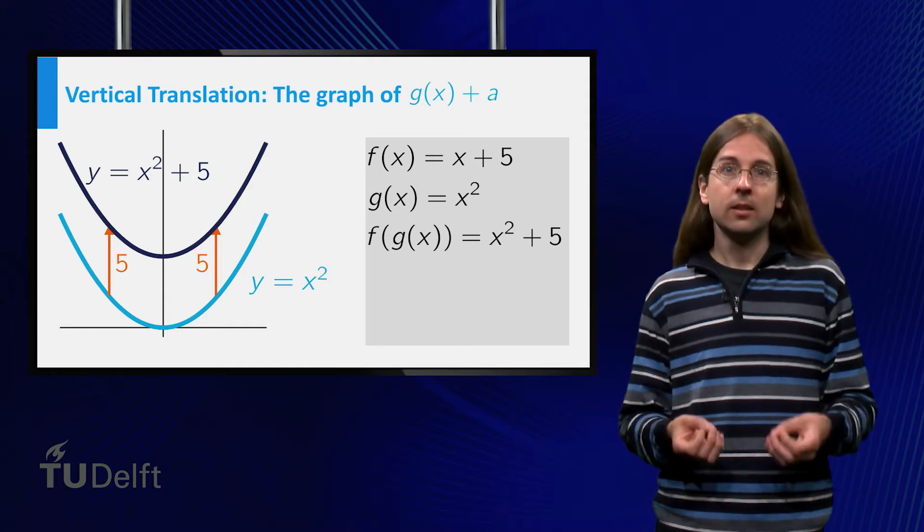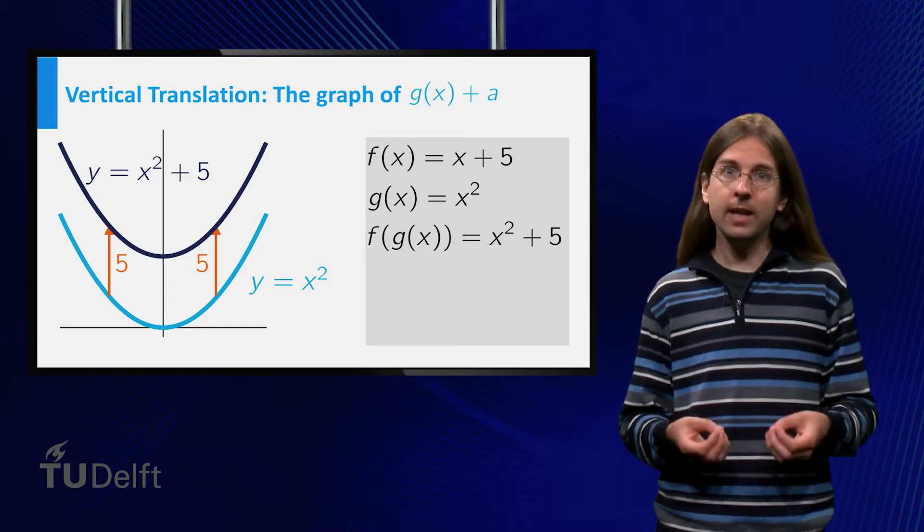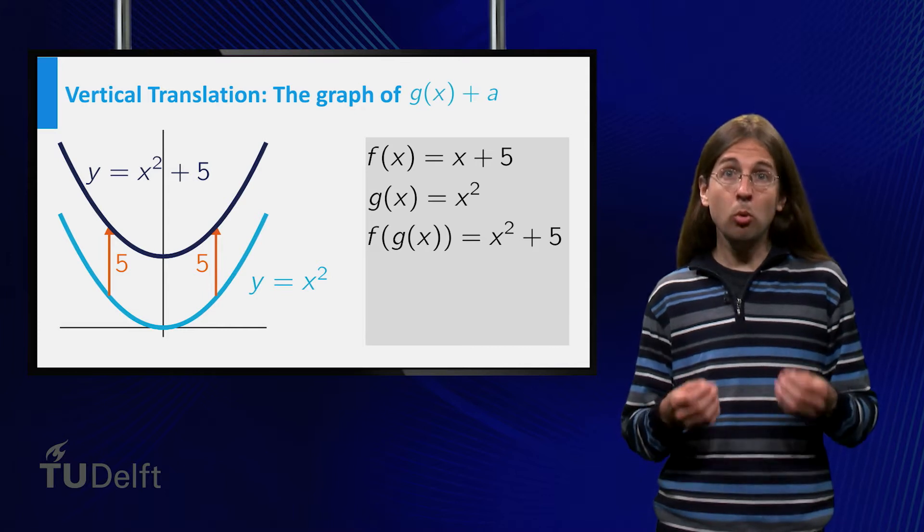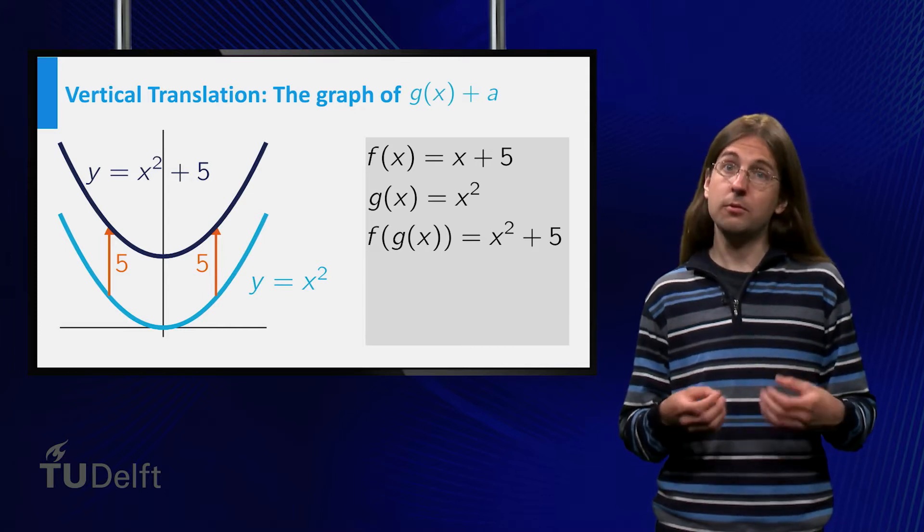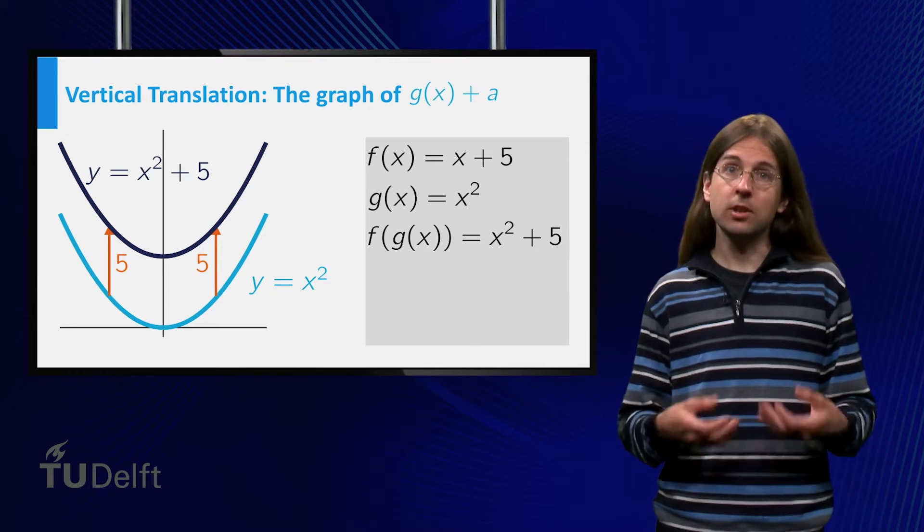And indeed, if we look at x squared plus 5 for arbitrary x, the result is always 5 higher than the value of x squared, so the graph is shifted upwards.